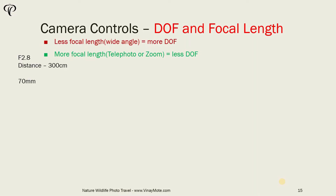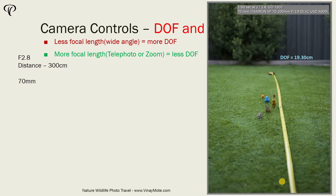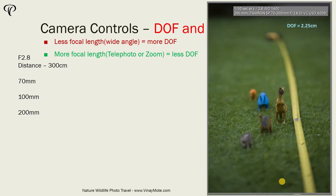We are keeping f-stop the same for all shots at f/2.8, and keeping the distance at 300 centimeters. At 70mm, the depth of field is around 19 centimeters. At 100mm, we zoomed the lens a little bit more and depth of field has reduced to 9 centimeters. At around 200mm, depth of field has been reduced drastically to just 2.25 centimeters — everything in front and behind is almost blurred.